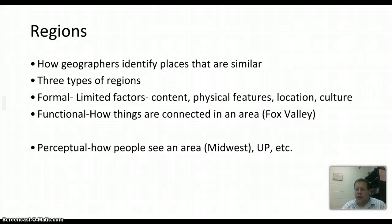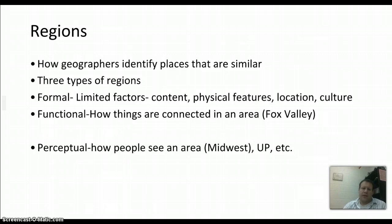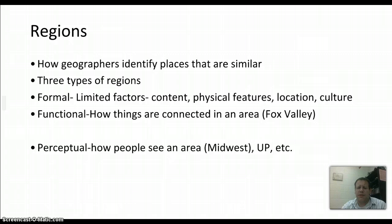A functional region is defined by how things are connected. Think about the Fox River Valley — all those cities are connected through the Fox Valley in Wisconsin. The Mississippi Valley is another example: all those cities along the Mississippi River are connected by the river, making it one big region. A perceptual region is how people see an area — like the Midwest, where people think of a certain way of acting, talking, and shared interests, or the East or West Coast.